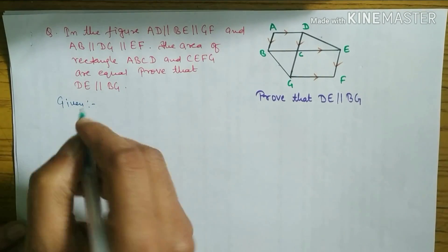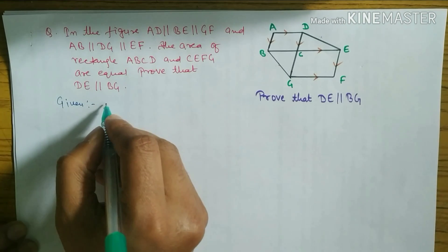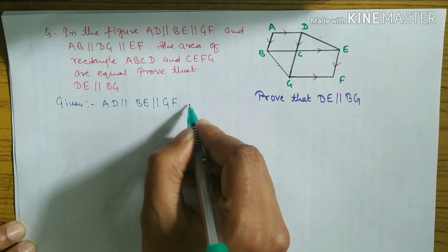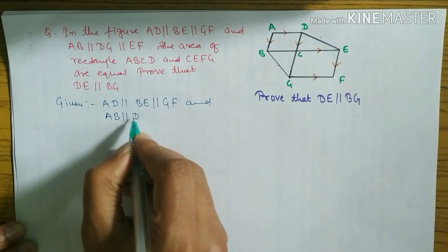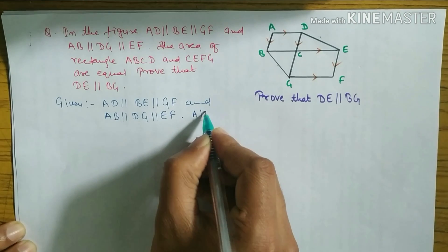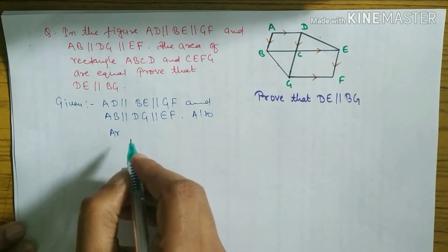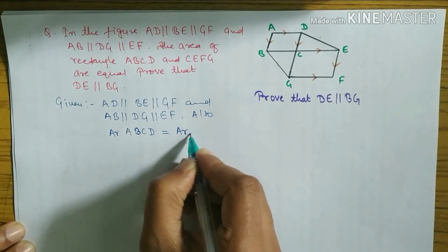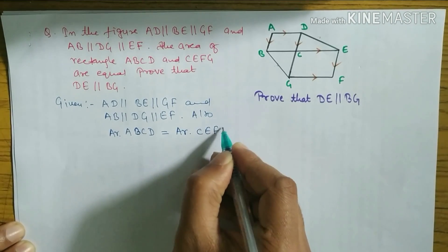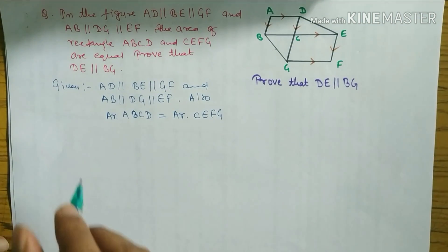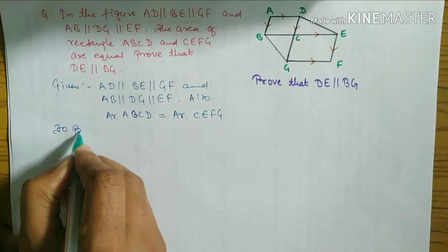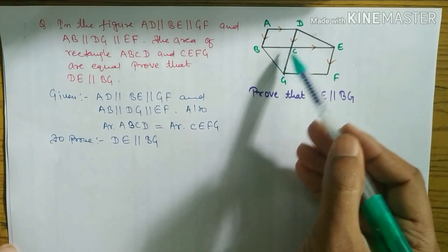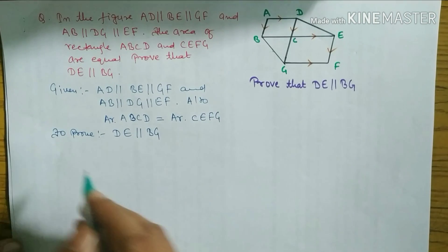Let's start. What is given here: AD is parallel to BC, parallel to GF; and AB is parallel to DG, parallel to EF. Also given: area of rectangle ABCD is equal to area of rectangle CEFG — these two rectangles are equal. What we have to prove: DE is parallel to BG — we have to prove that DE and BG are parallel.